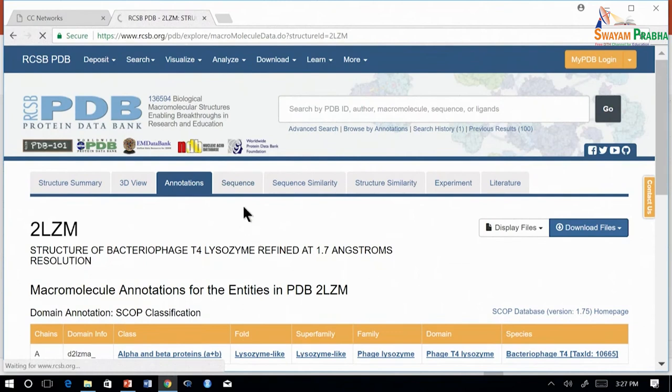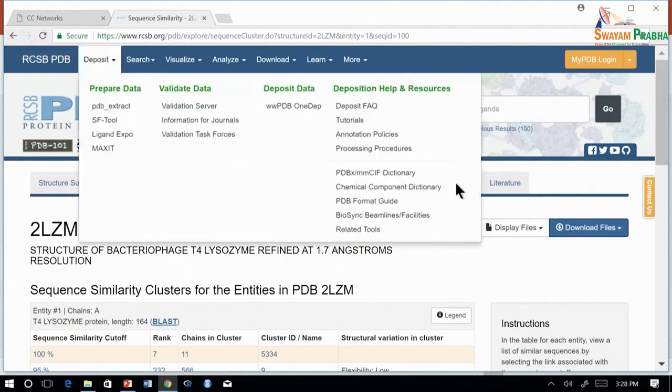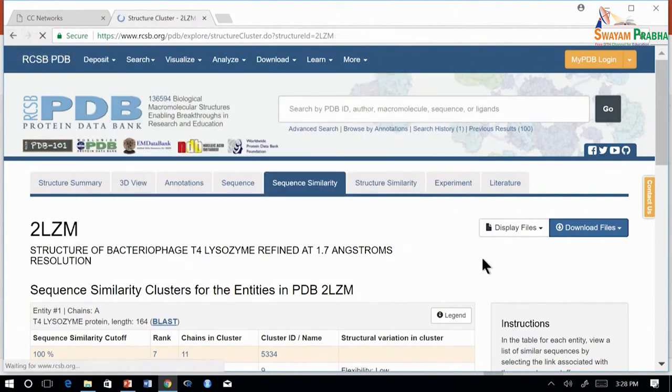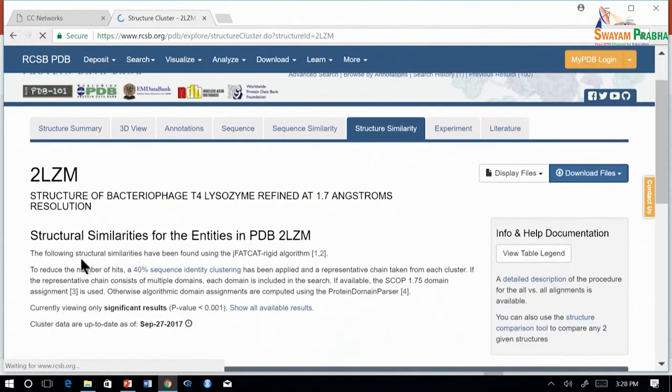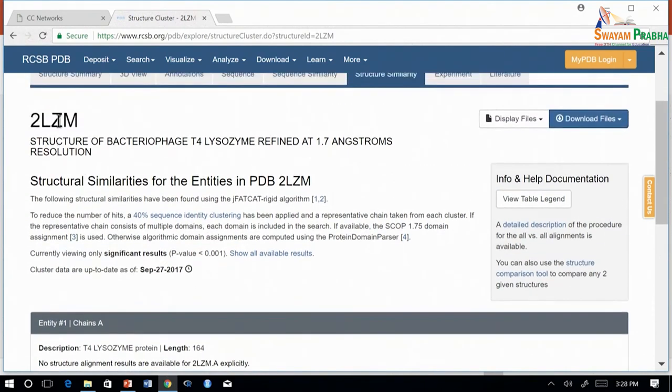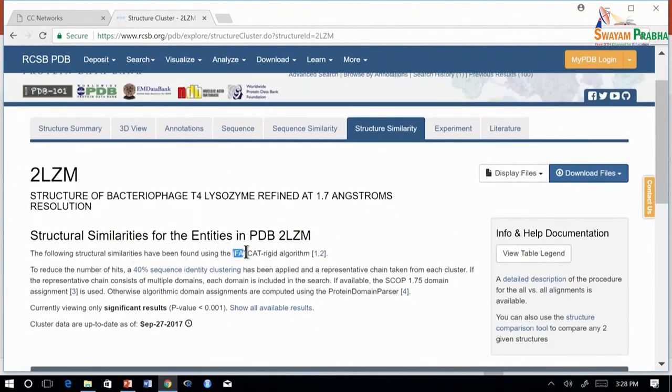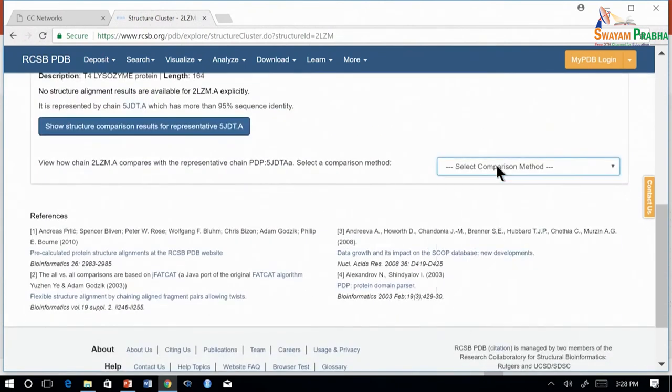The sequence tab to know the structures or the sequences in that cluster. Structural similarity. Here we can see all the structurally similar entities in PDB which match to LZM. Structure similarity is done using the FATCAT-rigid algorithm. You can also choose other algorithms here.